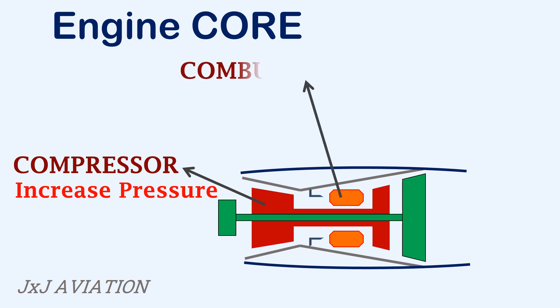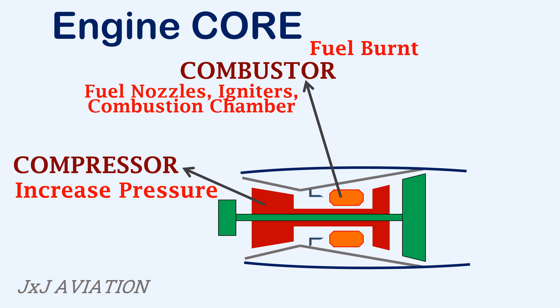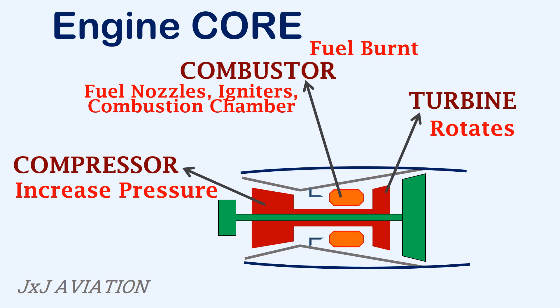Then we have the combustor which consists of fuel nozzles, igniters and combustion chambers. Here fuel is sprayed which mixes with the high pressure air and gets burnt inside the combustion chamber. In the combustion chamber, the pressure and the temperature of the gases increase. The high pressure gases are then allowed to expand in the turbine section which causes the turbine to rotate, which in turn causes the compressors to rotate. These components are similar to a gas turbine engine.